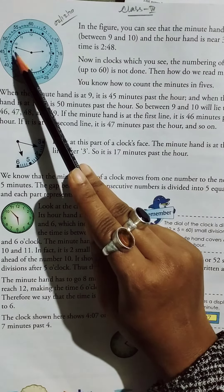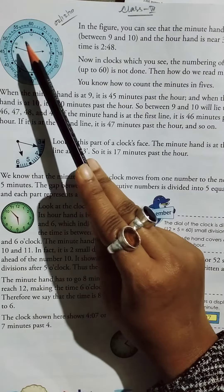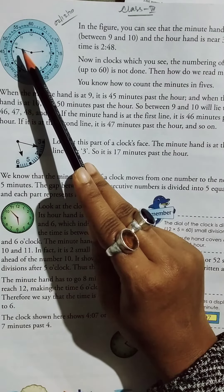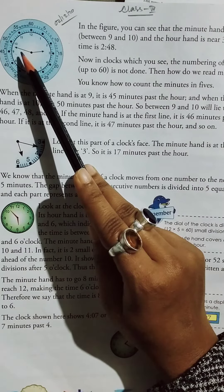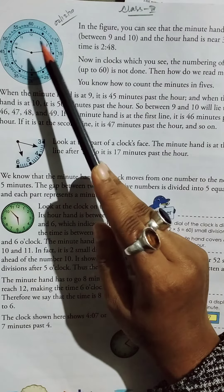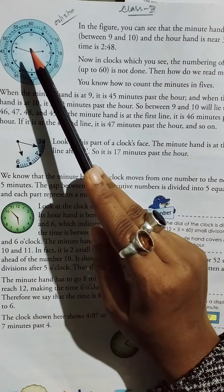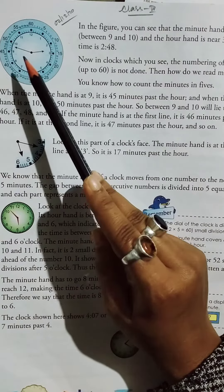So between 9 and 10 will lie the minutes 46, 47, 48, and 49. If the minute hand is at the first line, it is 46 minutes past the hour. If it is at the second line, it is 47 minutes past the hour, and so on.